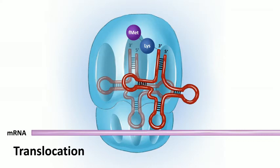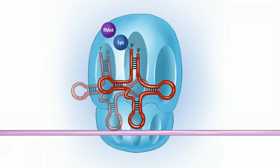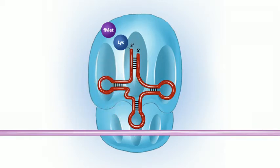The next step, still part of elongation, is called translocation, where the ribosome complex moves down the mRNA three nucleotides, moving the tRNA with the growing polypeptide from the A site to the P site. This also moves the uncharged tRNA from the P site to the E site, where it exits and can be recharged by aminoacyl-tRNA synthetase.